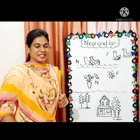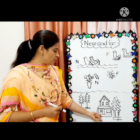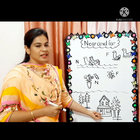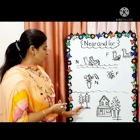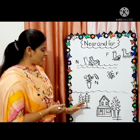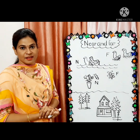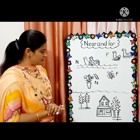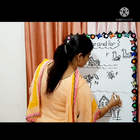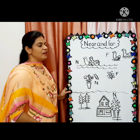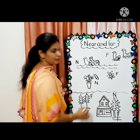आ रहा है ना समझ? Yes, simple concept है। अब देखें last picture — एक home की picture है, घर बना हुआ है। और उसके साथ trees drawn हैं। मुझे बताएं कि कौन सा tree near है house के और कौन सा far है। जो घर के बिल्कुल पास बना हुआ है वो near है, और जो tree घर से दूर है वो far है।